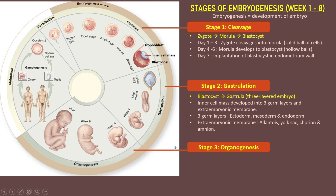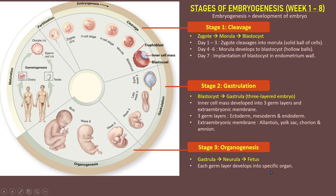In stage 3, organogenesis, organs will be developed from each germ layer. The gastrula develops into neurula and then into fetus. Neurula is a stage where the nervous system is developed. The fetus is when the embryo has completely formed its main organs. Each germ layer develops into specific organs, and at week 5 to 6 we can listen to the first heartbeat of the embryo. At week 9, the fetus is completely formed with the main organs already developed.